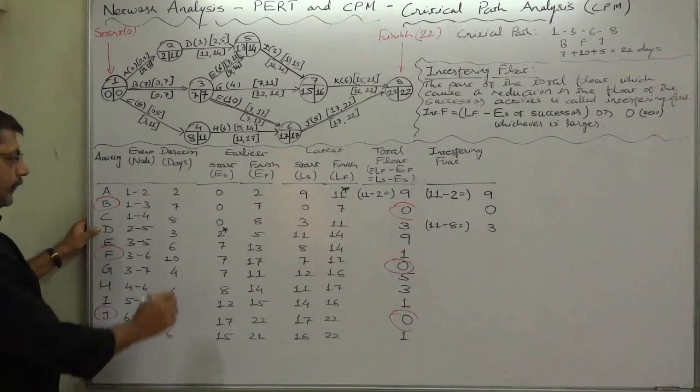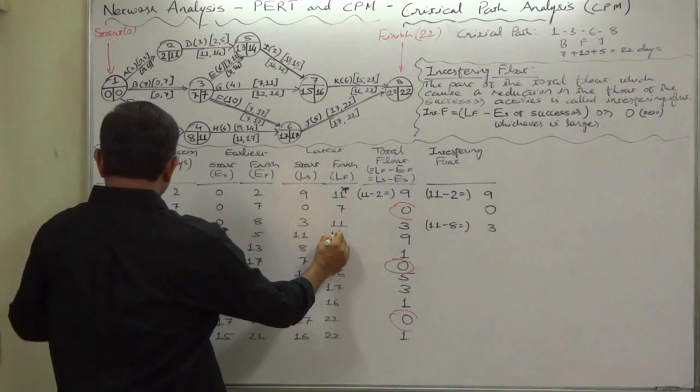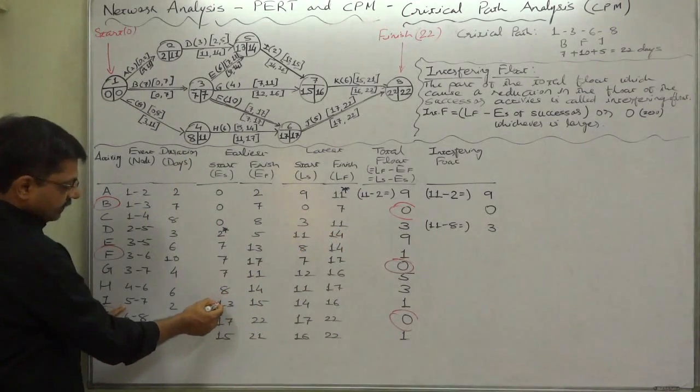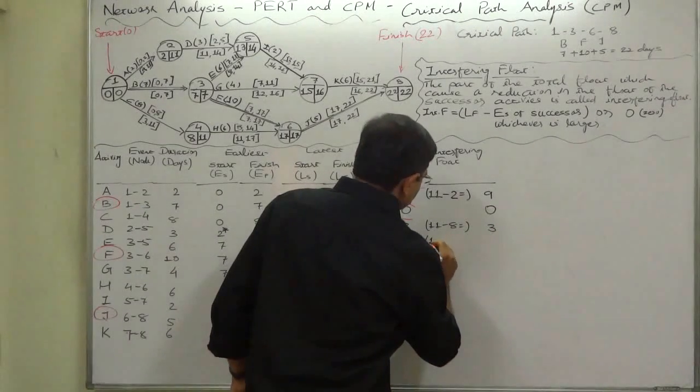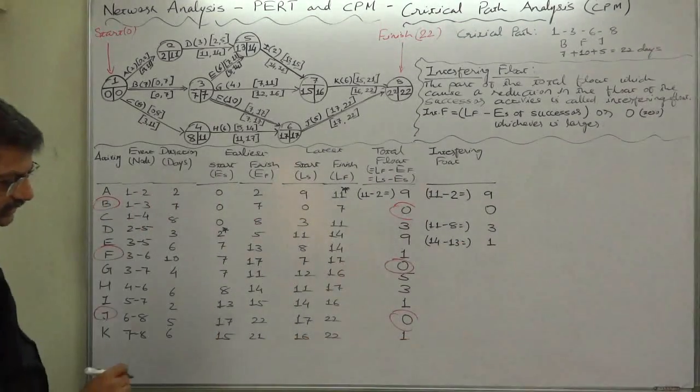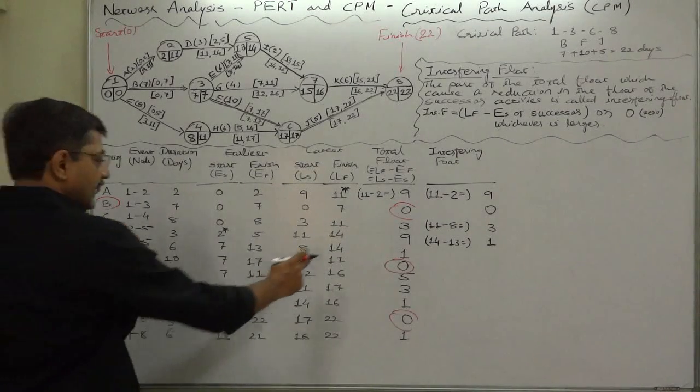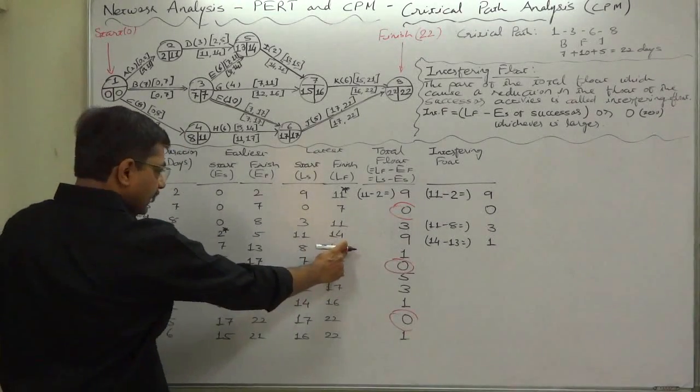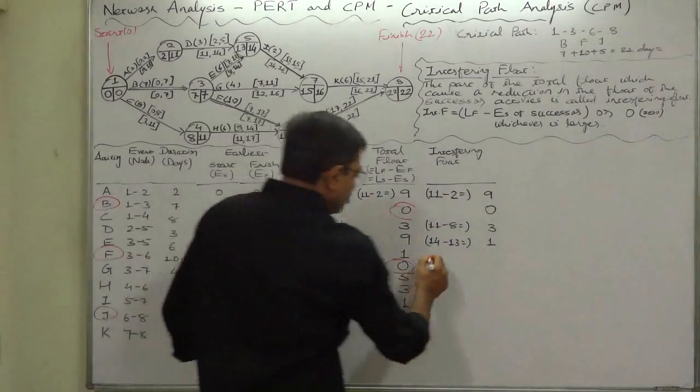Now it is turn of D. Latest finish time is 14 and successor is I. Its earliest start time is 13. 14 minus 13 equals 1. Now E: latest finish time of E is 14, the successor is I, earliest start time is 13, so again 14 minus 13 equals 1.